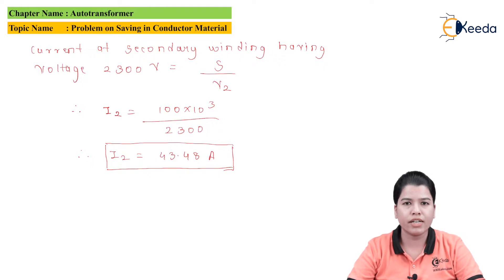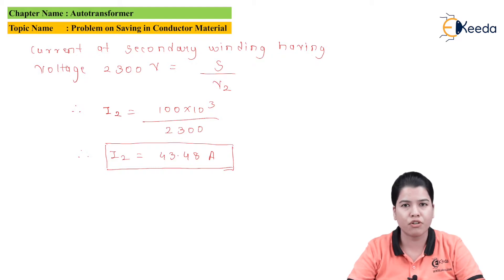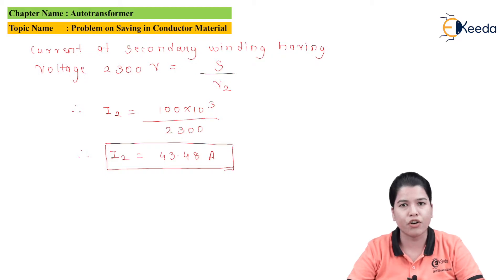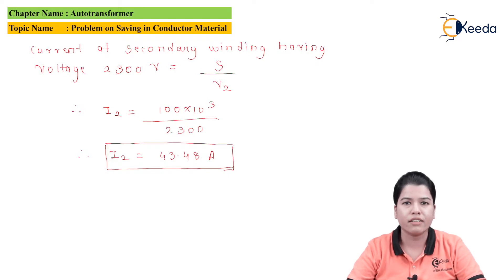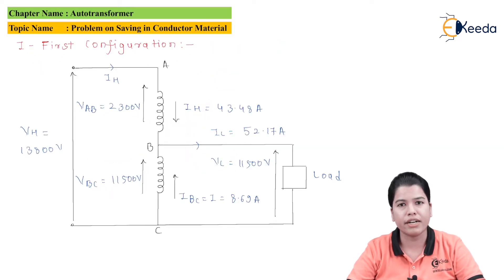These are the two currents when the transformer is considered as a two winding transformer. If we want to use the same transformer as an auto transformer, the two windings have to be connected in series. When this transformer operates as the auto transformer, the currents in the primary and secondary windings will not exceed their rated values, so these will be the currents for the auto transformer as well. We have to consider two configurations in which the auto transformer windings can be connected.